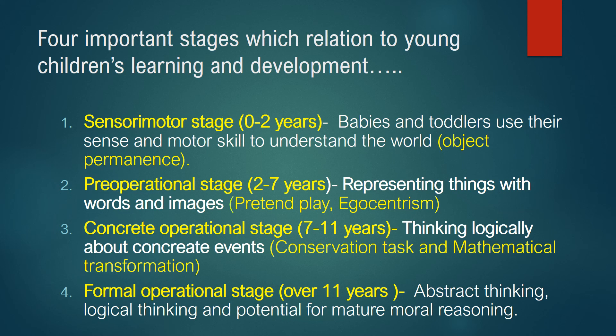The next stage is the pre-operational stage: two to seven years. Children represent things with words and images. For example, a child might use a banana pretending it is a phone, or use a broomstick to play cricket. So they use one object to represent another — using a representing thing in place of the actual thing.